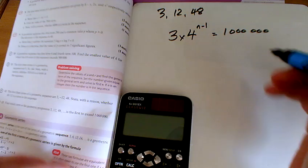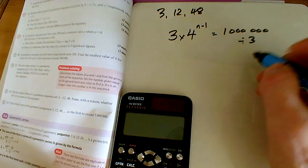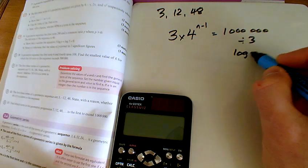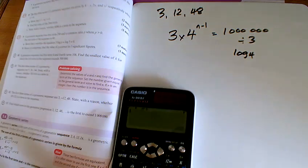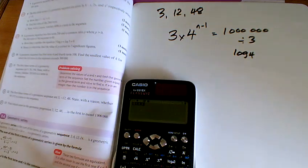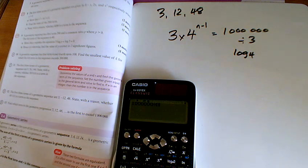So we're going to divide by 3 and then take log to the base 4 of this. So I put 1 million in. I'm going to divide it by 3.